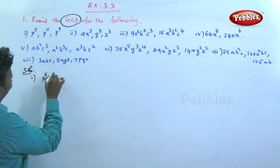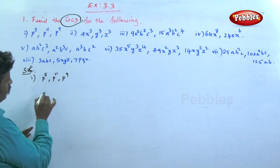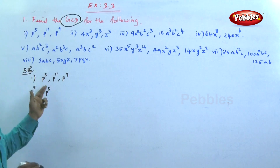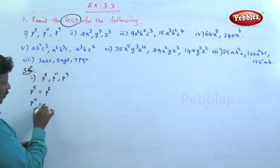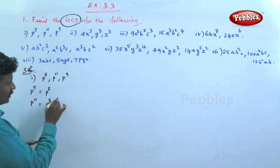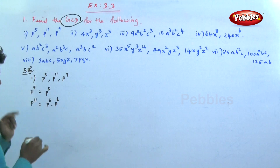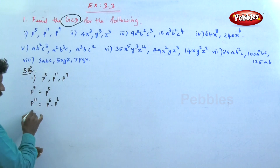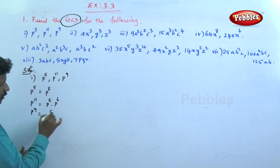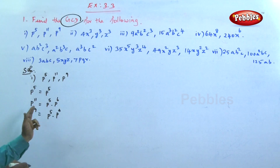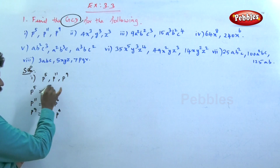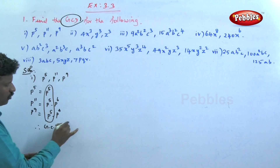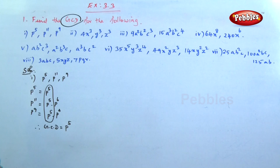The first problem: find the GCD of p^5, p^11, and p^9. Here p^5 is the minimum power. p^5 divides p^6 giving p^11, and p^5 divides p^4 giving p^9. Therefore the GCD is equal to p^5.